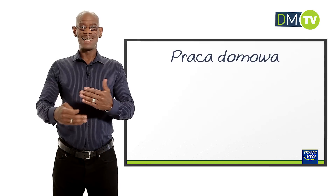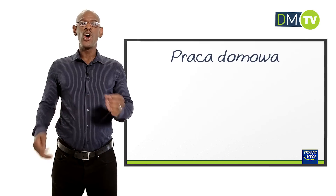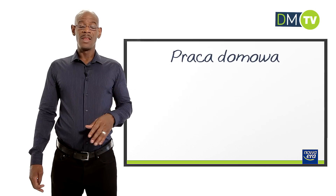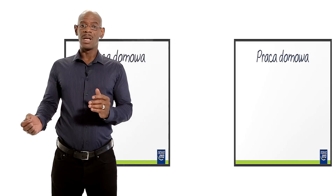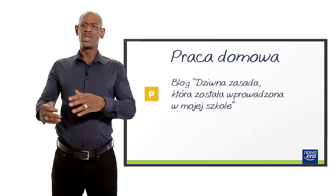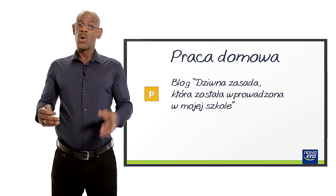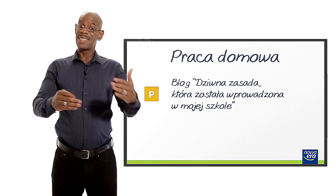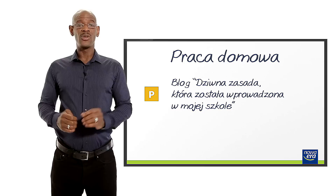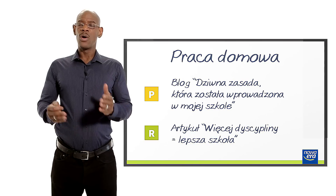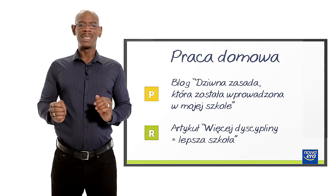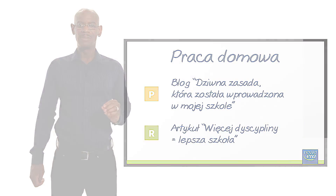You can finish up your lesson with a homework writing assignment. The basic level students are to write a blog about some unusual rule which has been introduced in their school, whereas the extended level students could be asked to write an article entitled 'More Discipline Equals Better School.' See you next time, when I will show you how to teach your students how to write a blog.